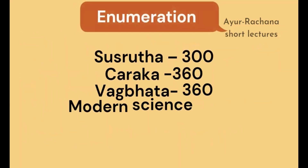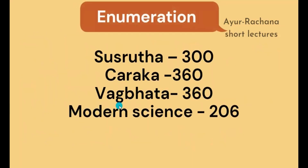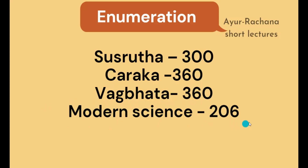I will conclude with the enumeration of asti, because there are certain changes when it comes to the count of asti according to different acharyas. According to Susruta, there are 300 asti in the body. According to Charaka and Vagbhata, there are 360. Modern science considers only 206 bones.